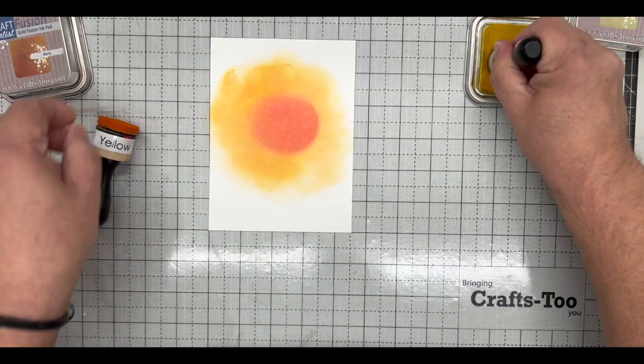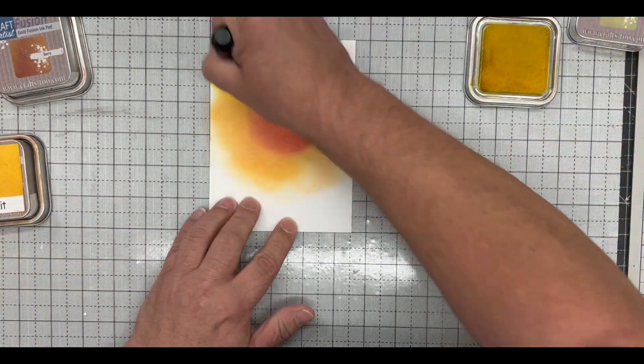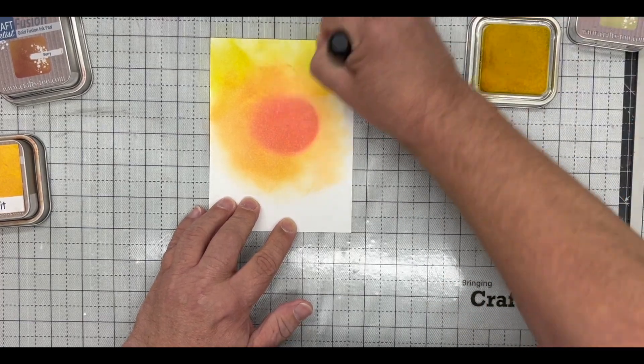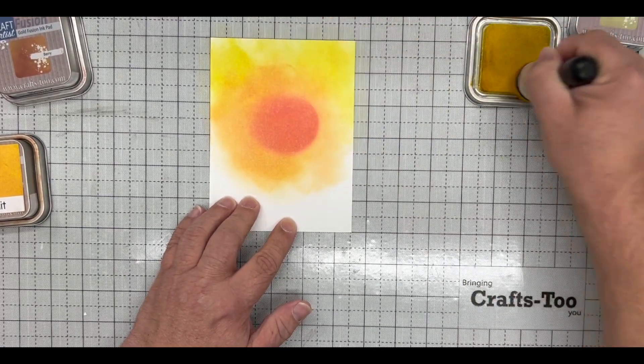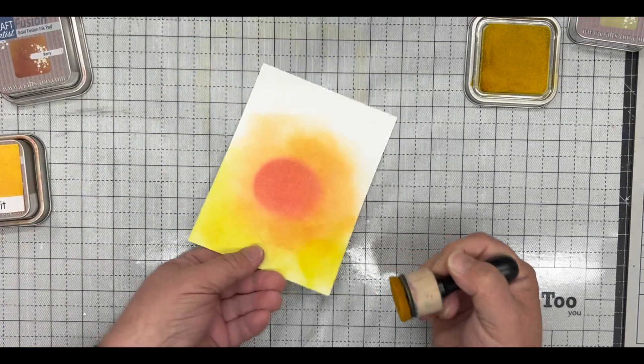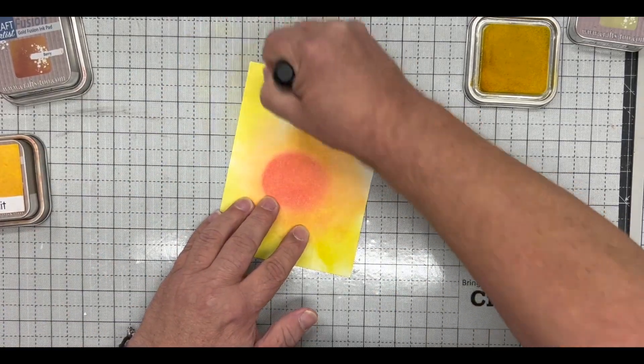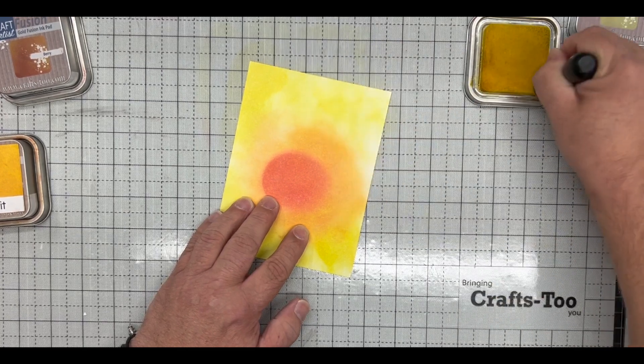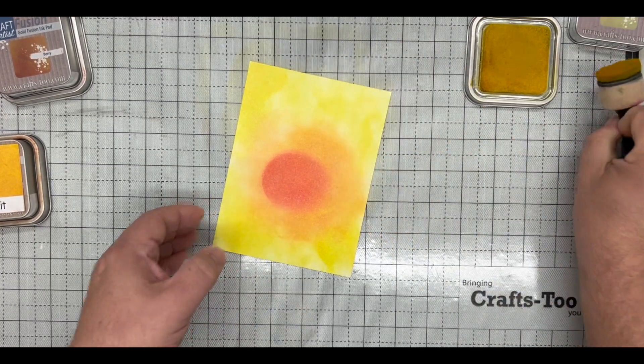I'm then going to finish with the sunlight, which is from the Pearl range, and it's just covering the rest of the card. And again, you don't need to make this perfect. The way we're going to cover it will absolutely work and it will look like we've made a complete perfect sunrise. Going in with the yellow, nice and simple.